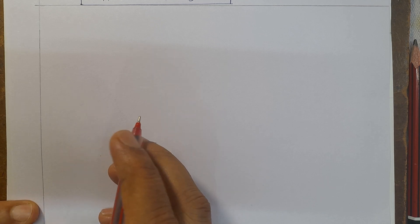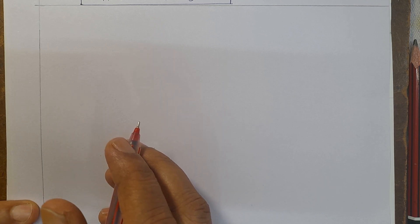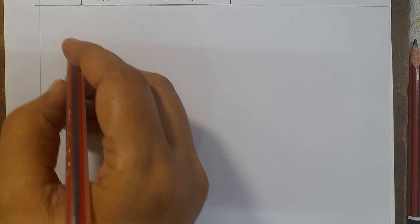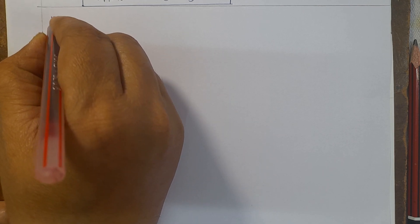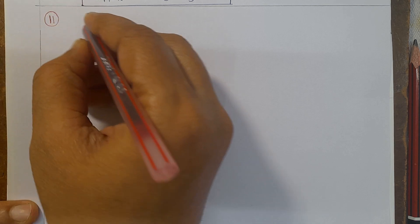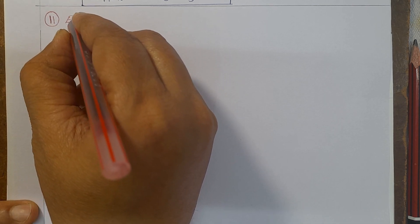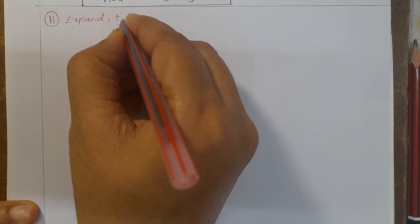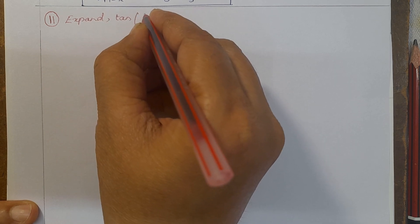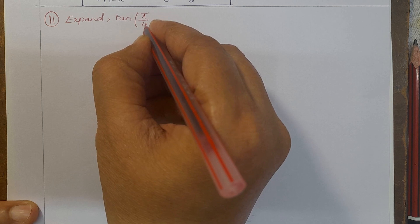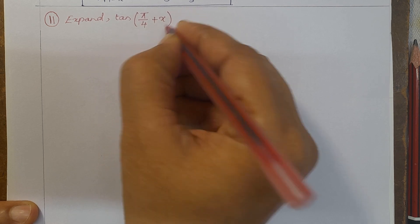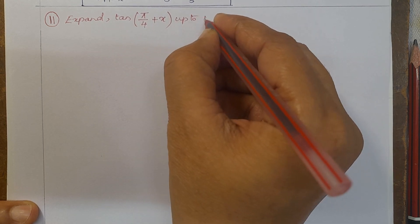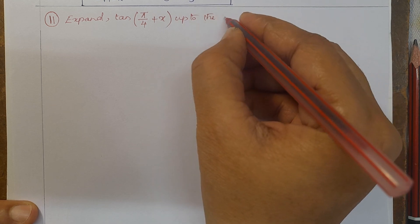Namaste. Engineering Mathematics, Module, Differential Calculus 2. Problem number 11: Expand tan(π/4 + x) up to the 4th degree terms.